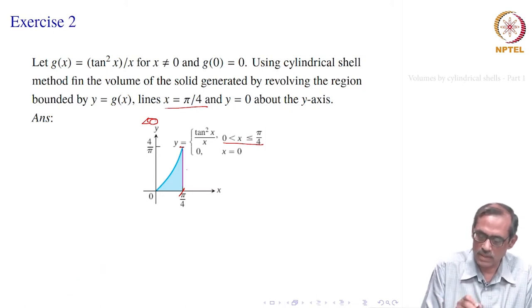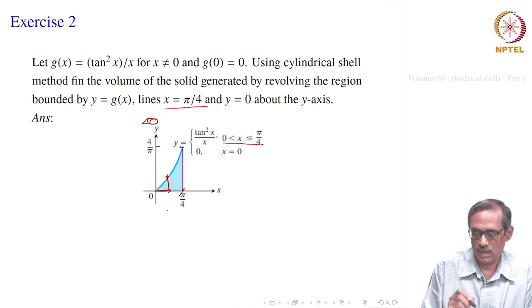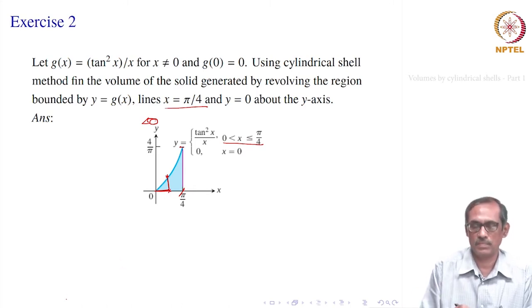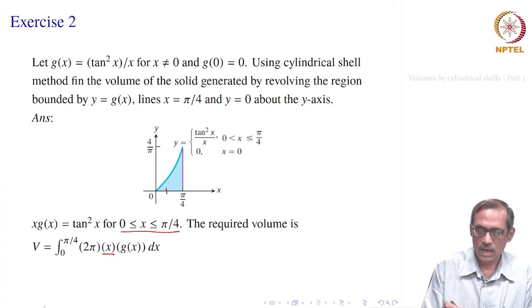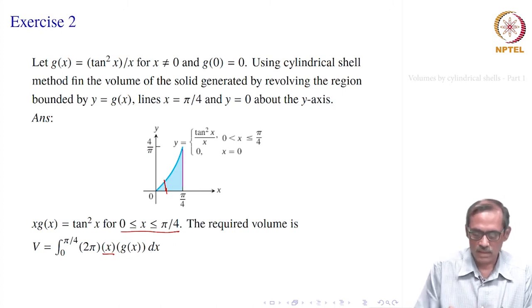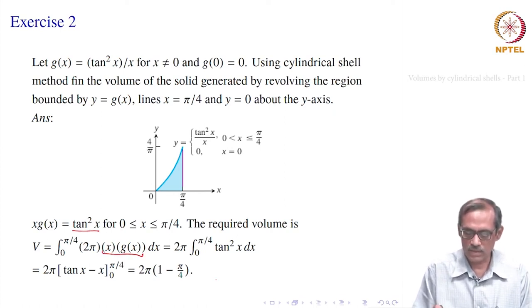If you take the radius of revolution at any point x, the cell radius is x (from 0 to x) and the height is tan²x / x. So it is x · g(x) · 2π in the integral. The integral goes from 0 to π/4: Volume = ∫₀^{π/4} 2π · x · g(x) dx. Since x·g(x) = tan²x, we get 2π ∫₀^{π/4} tan²x dx, and the issue at x = 0 is avoided since we consider x·g(x) together.